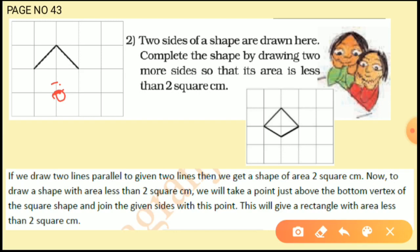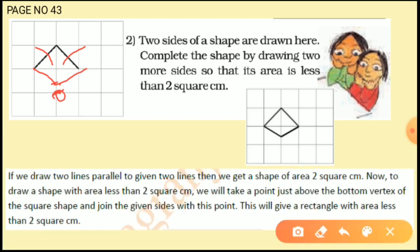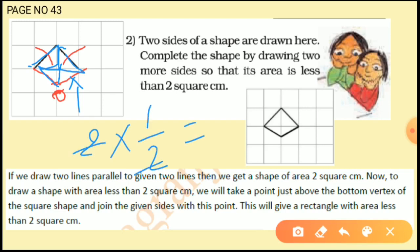Now we join these two lines. This shape has two half squares, but the remaining parts are less than half — so they are not counted. That gives us 2 times half, which is equal to 1. So the area of this shape is 1 square centimeter, and that is less than 2 square centimeter.